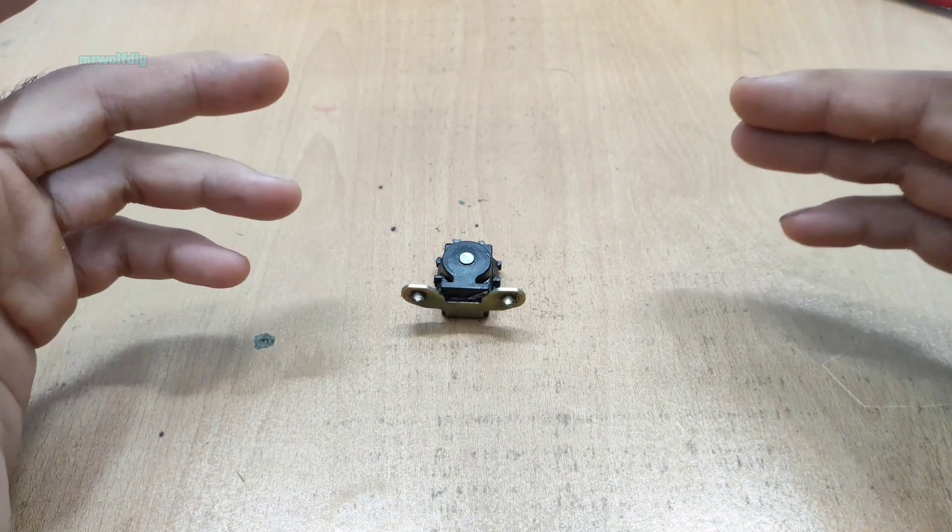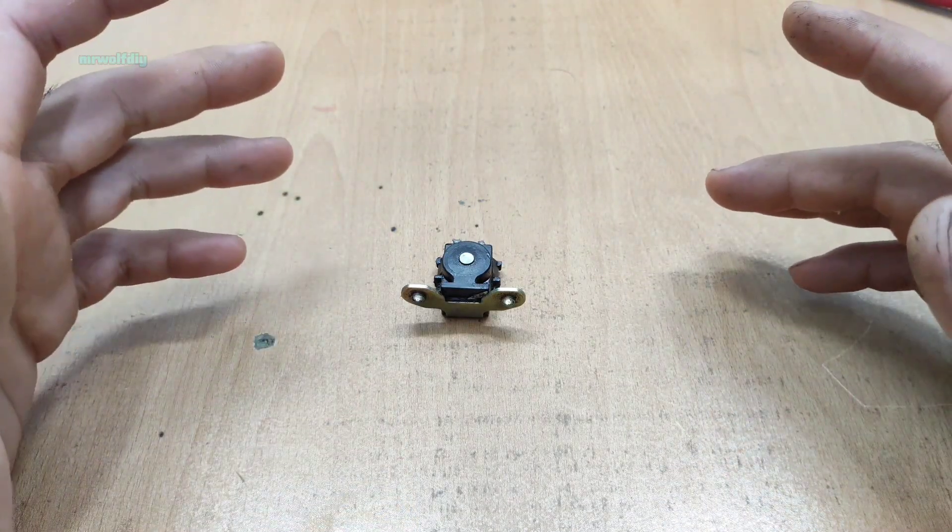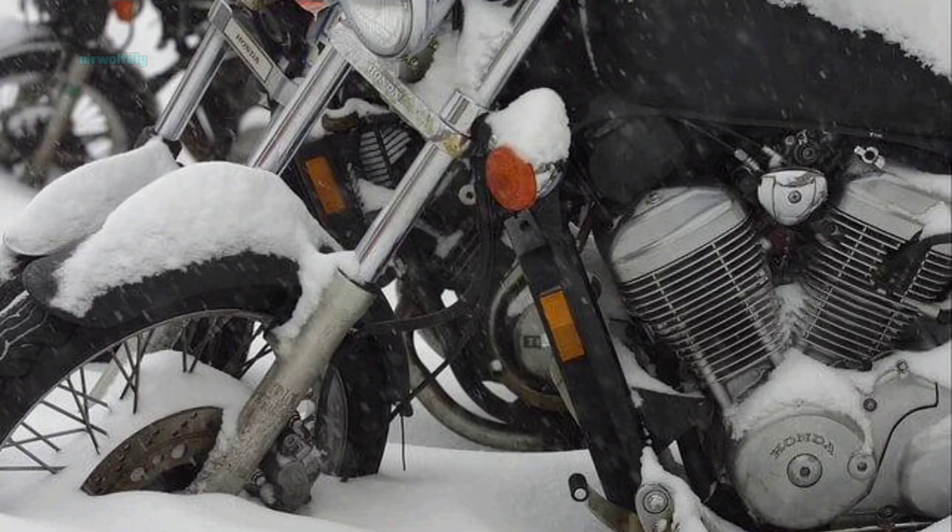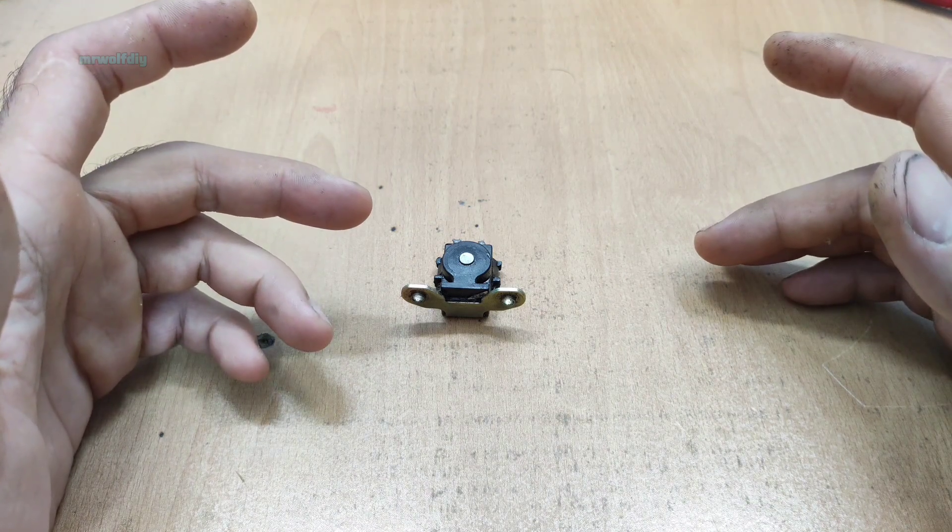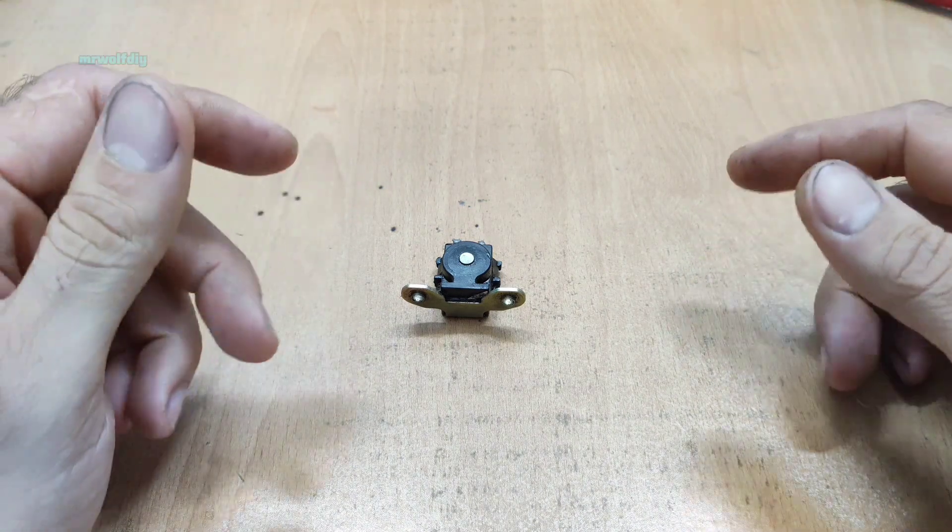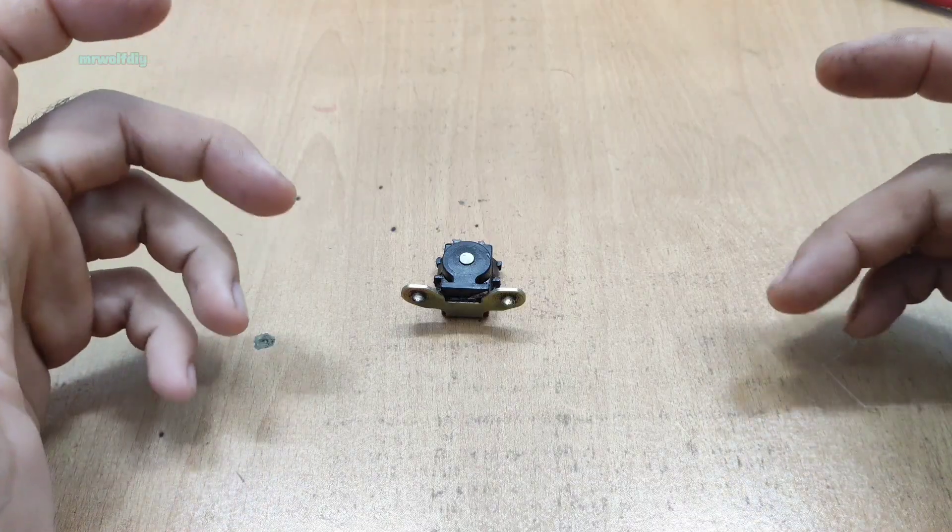We measured the pickup resistance when the engine was completely cooled. Usually when the engine gets hot, a bad pickup starts to show problems and its resistance may go up or down. To understand this better, I'll show you a sample method to check this.